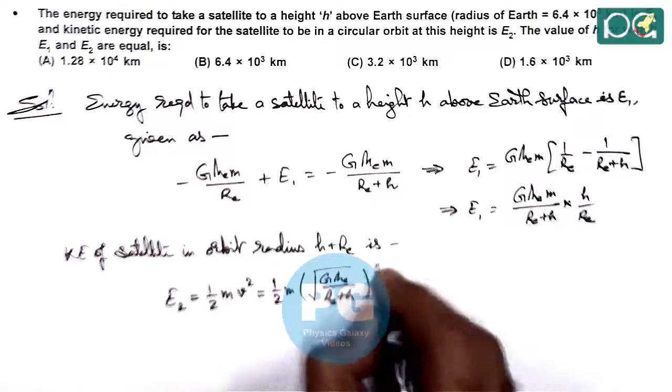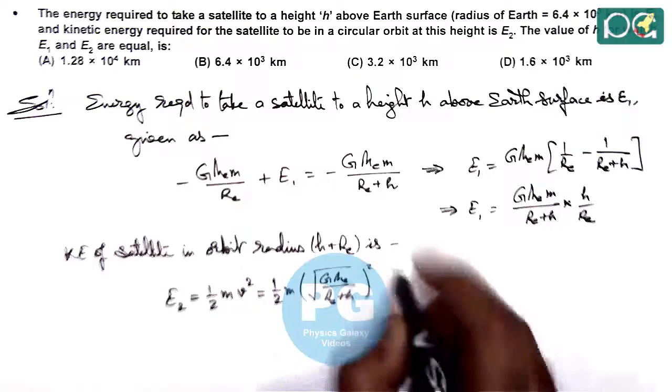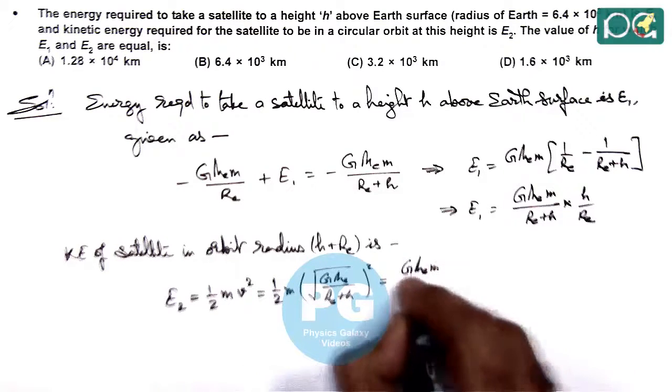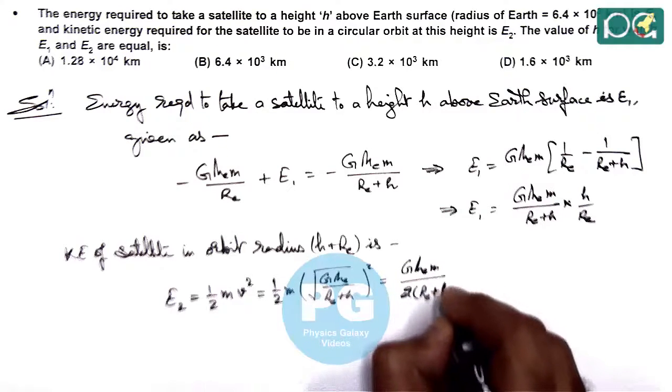So this is GmEm divided by twice of Re plus H.